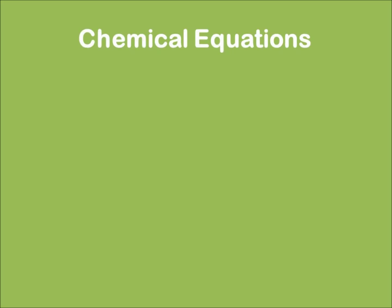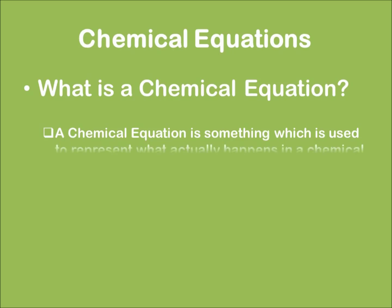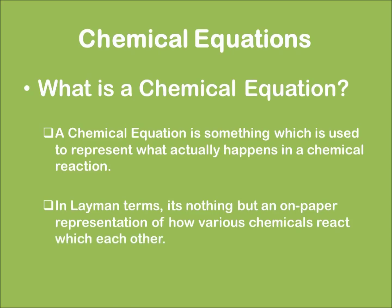Now let's learn about chemical equations. First of all, what is a chemical equation? A chemical equation is something which is used to represent what actually happens in a chemical reaction. In simple language, it is an on-paper representation of how various chemicals react with each other during a chemical reaction.